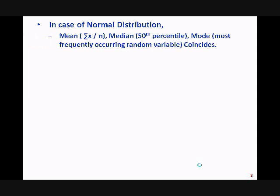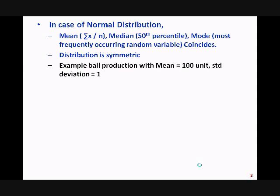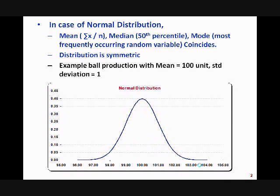In case of normal distribution, the mean, median, and mode coincide — that's the first property. The second property is that the distribution is symmetric. Let's understand it with an example: suppose balls are being produced with a mean of 100 units and a standard deviation of 1 unit, and the balls follow a normal distribution. Essentially, the frequency distribution of balls between ranges like 98–99, 99–100, etc., will follow the normal distribution.